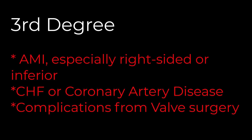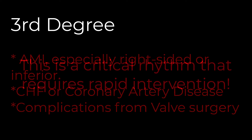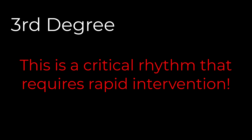Third-degree blocks can be caused by acute MI, especially right-sided and inferior, CHF, coronary heart disease, or complications from valve replacement surgery. Clinically, this is a critical finding, especially if the ventricular beats are originating low in the heart — this will typically produce very poor cardiac output. The ventricles are ineffective pacemakers and they fatigue easily. And if they stop firing and nothing is making its way past the AV node, the result is asystole.